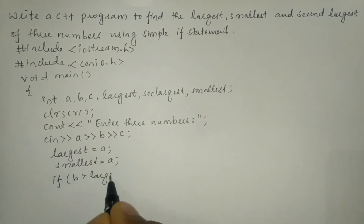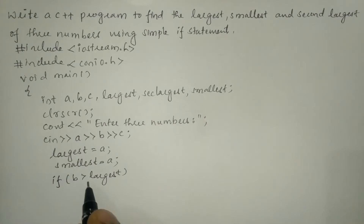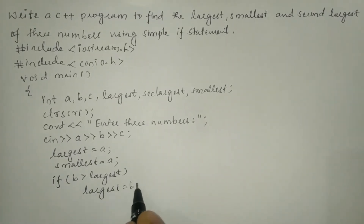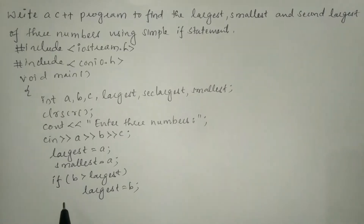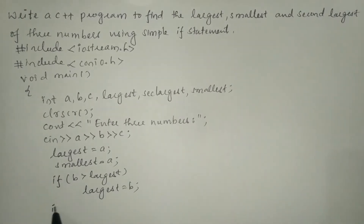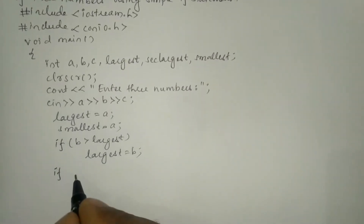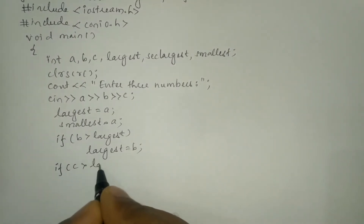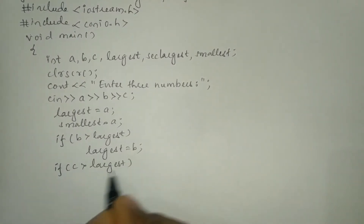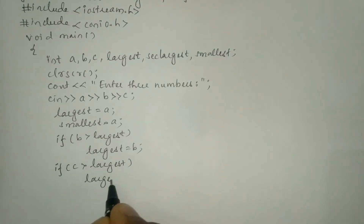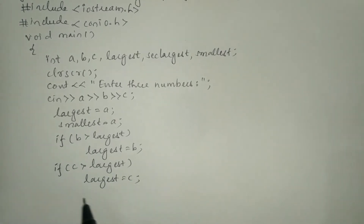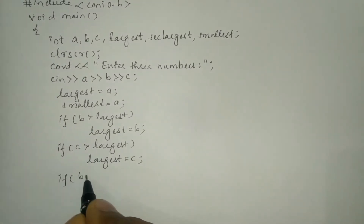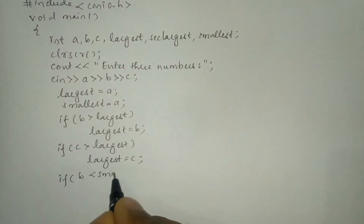Now we are going to use the selection statement: if b is greater than largest, then largest is assigned with the value b. Next we use another simple if statement to check if c is greater than largest, then largest = c, followed by a semicolon.